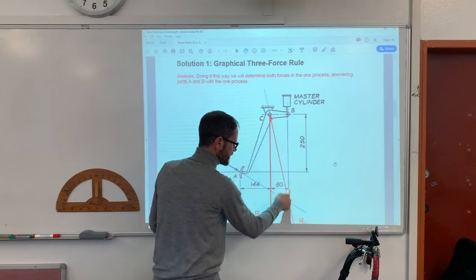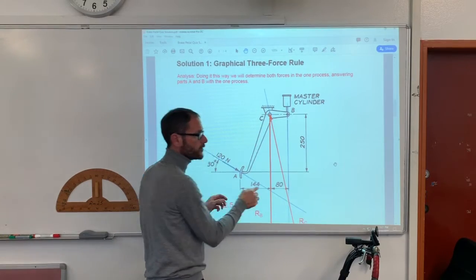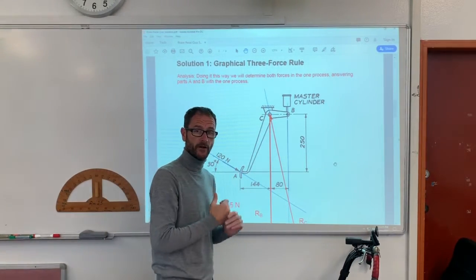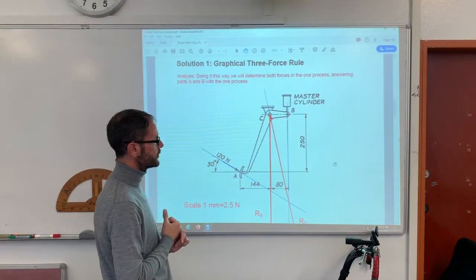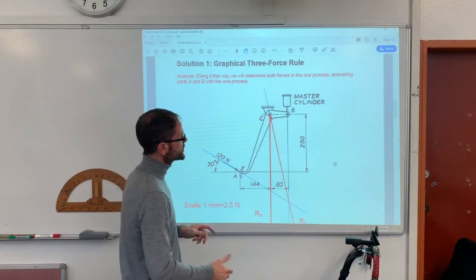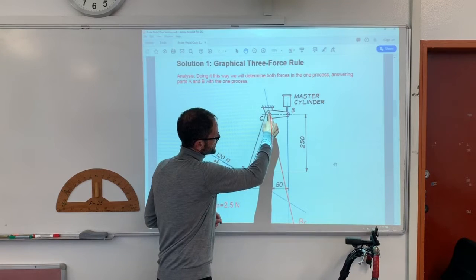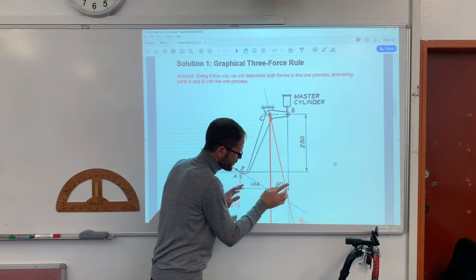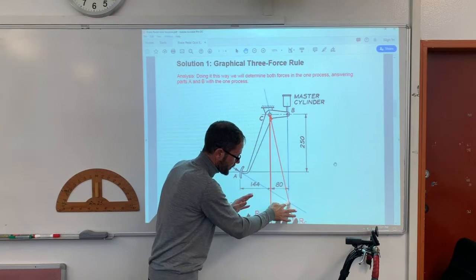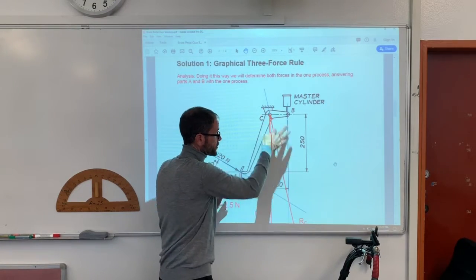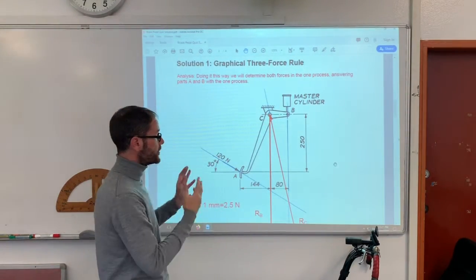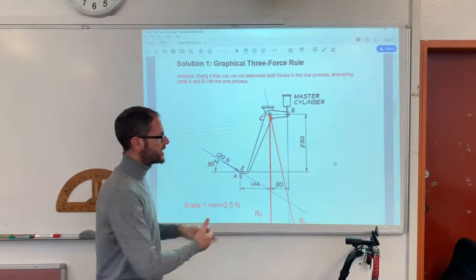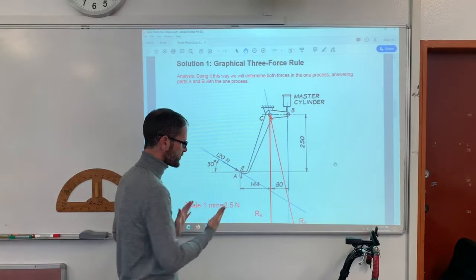But when we extend these line of actions, we find a point of concurrency. And since these three forces are clearly not parallel, they must be concurrent by the three force rule. So we can see that I've extended this line of action down through here until it intersects. And that finds me the point of concurrency. That finds me the direction of that force. So now I know the direction of all three forces.